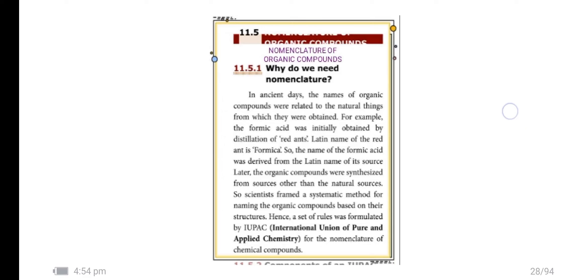Later, the organic compounds were synthesized from sources other than the natural sources. So scientists framed a systematic method for naming the organic compounds based on their structures. Hence, a set of rules was formulated by IUPAC, International Union of Pure and Applied Chemistry for the nomenclature of chemical compounds.